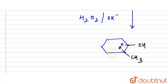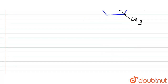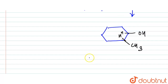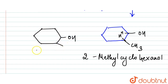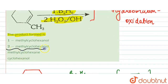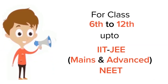This product is 2-methylcyclohexanol. So the final product we have obtained is 2-methylcyclohexanol, which means the answer is option number 2 — that is, 2-methylcyclohexanol.